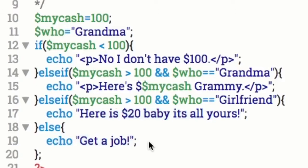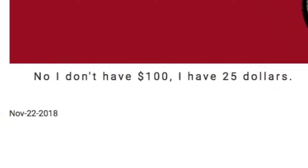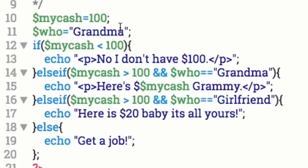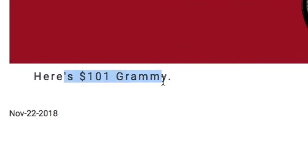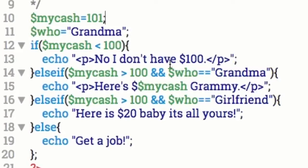Why do we have 'get a job'? Oh — it's asking if it's greater than $100, but my cash is equal to $100, not greater than. So let's set it to $101. Save that, refresh. 'Here's $101, Grammy.' Because she's asking you for $100 and you're going to give her $101 — give her everything in that wallet. Now let's say it's the girlfriend asking.